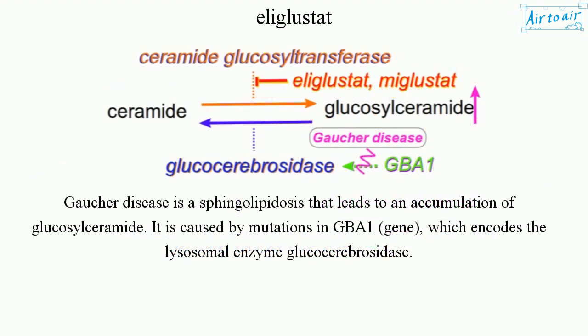Gaucher disease is a sphingolipidosis that leads to an accumulation of glucosyl ceramide. It is caused by mutations in the GBA1 gene, which encodes the lysosomal enzyme glucocerebrosidase.